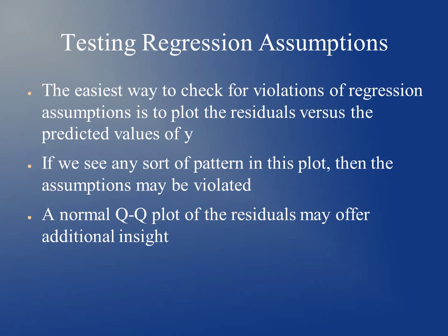The easiest way to check for violations of regression assumptions is to plot the residuals versus the predicted values of y. If you see any sort of pattern, then the assumptions may be violated. If the errors aren't distributed with a mean of zero — they should just be randomly distributed across the plot — then the assumptions for our error may be violated.